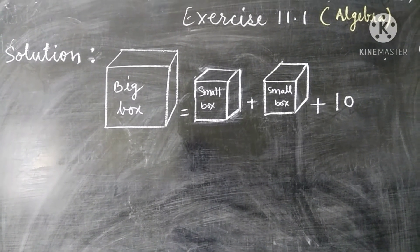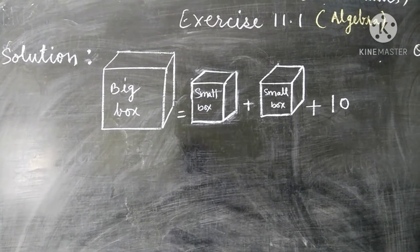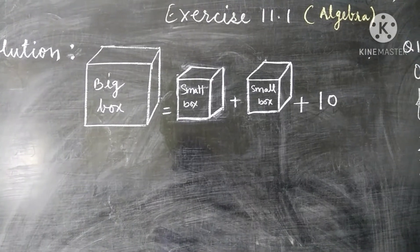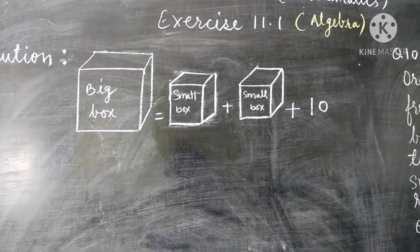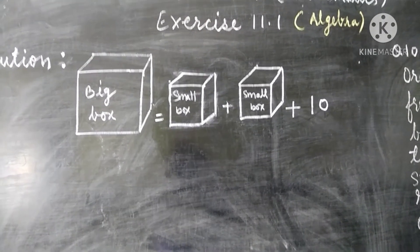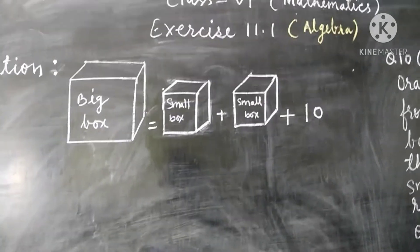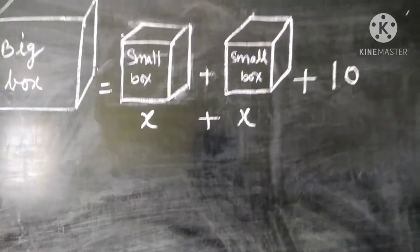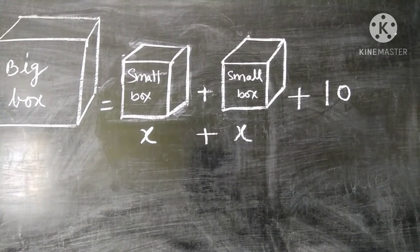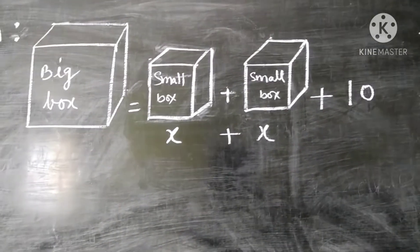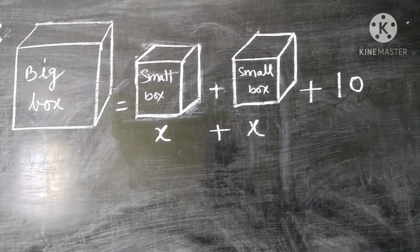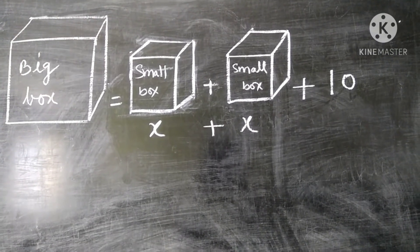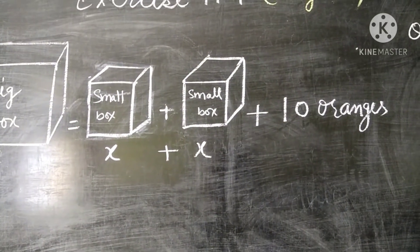In one large box there are some oranges. When we transfer these oranges into two small boxes, we assume that one small box gets x number of oranges, the second box also gets x number of oranges, but the large box is still not completely emptied — after filling both small boxes, 10 oranges still remain.